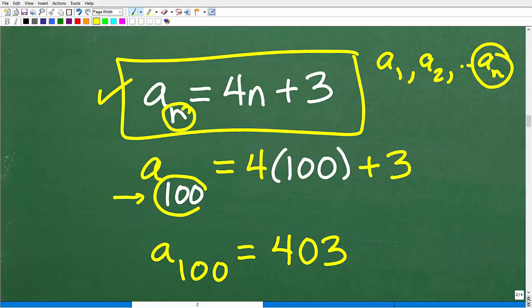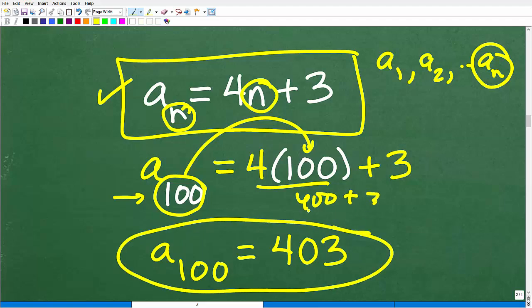So n is 100. So we're going to plug in 100 for this n. So this is going to be 4 times 100, which, of course, is 400 plus 3. So the value of that 100th term is 403.